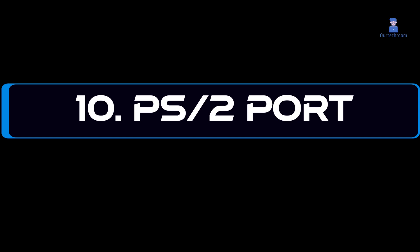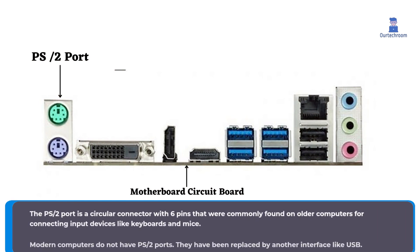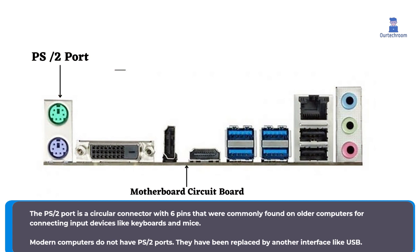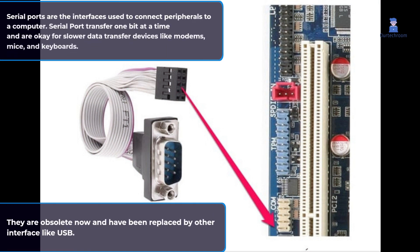10. PS2 Port. The PS2 port is a circular connector with six pins that was commonly found on older computers for connecting input devices like keyboards and mice. Modern computers do not have PS2 ports; they have been replaced by interfaces like USB. 11. Serial Port. Serial ports are interfaces used to connect peripherals to a computer. They transfer one bit at a time and are suitable for slower data transfer for devices like modems, mice, and keyboards. They are now obsolete and have been replaced by other interfaces like USB.